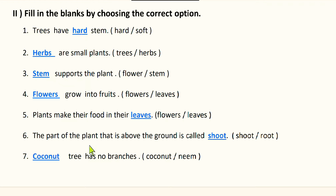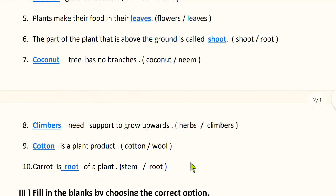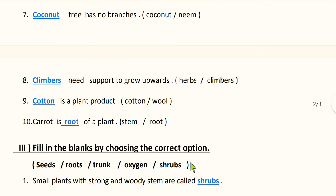Next: the part of the plant that is above the ground is called blank. The options are shoot and root. Root is the part of a plant which is under the ground, so the part above the ground is called shoot. Next: blank tree has no branches. The options are coconut and neem. Neem tree has branches, but coconut tree doesn't, so coconut tree has no branches.